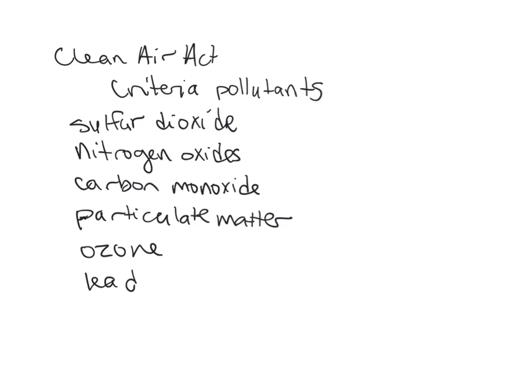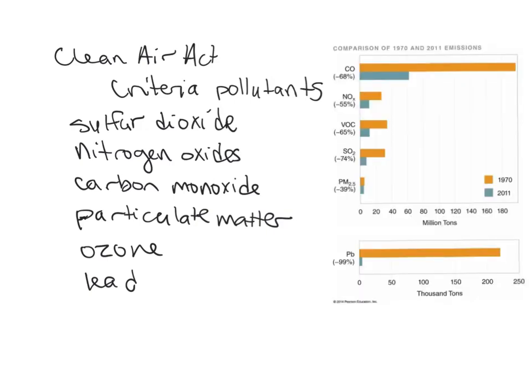You might notice that carbon dioxide is not on the criteria pollutants list. CO2 is important for climate change but is not a criteria pollutant. The EPA specifies allowable concentrations of each pollutant in emissions. Comparing 1970 to 2011 emissions of these various criteria pollutants, all of them have gone down — with lead probably gone down the most.